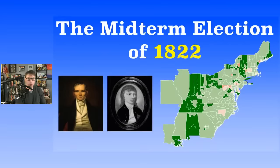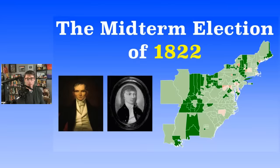Monroe easily won re-election, so that might be a preview of what happened in 1822. In the Senate, there were 48 seats total. The Federalists, you would think, did worse — but in the Senate they only lost one seat, and only had four seats in the Senate in 1822. Democratic-Republicans had 44 out of 48 seats. Imagine that today — that's the equivalent of one party having 92 of 100 senators.